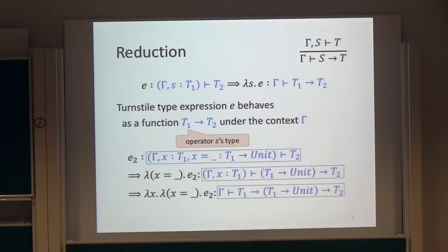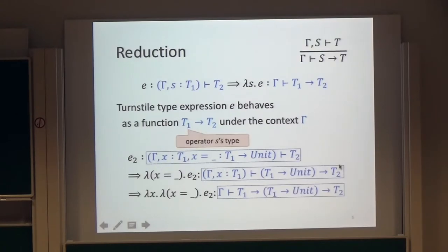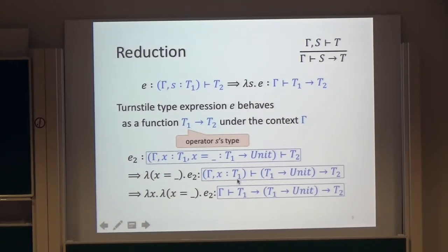For example, E2 is a turnstile type expression. It is translated into a lambda expression: lambda X equal underscore dot E2, by eliminating one assumption. And the lambda expression is also translated into another lambda expression by eliminating a further assumption. So the turnstile type expression E2 behaves as a function T1, R of T1, R of T1, R of T2.